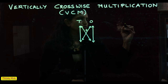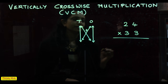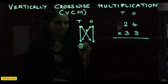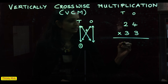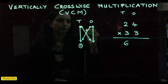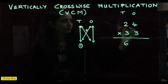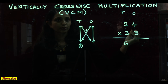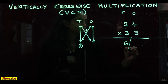Take an example of 24 multiplied by 33. Identify the ones place and the tens place. For the first step, take the product of the digits in the tens place crosswise and sum it up. The product of 2 and 3 is 6, the product of 3 and 4 is 12, and the sum of 12 and 6 is 18. We put a separator.